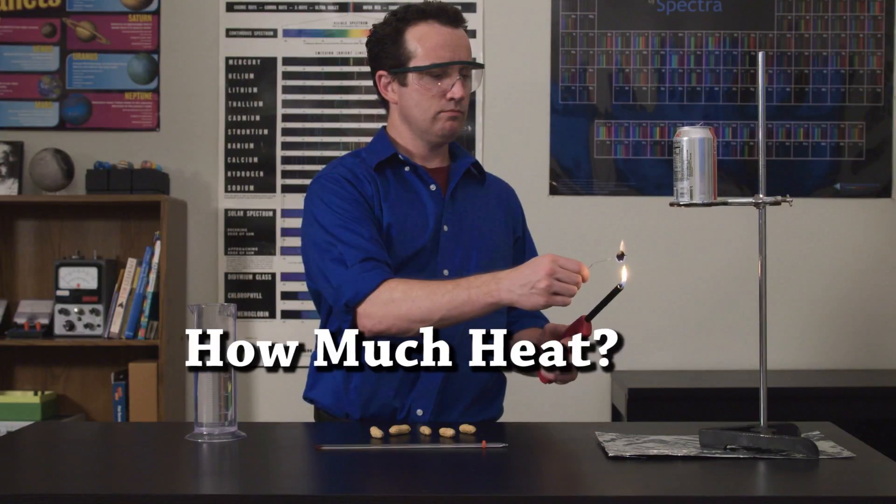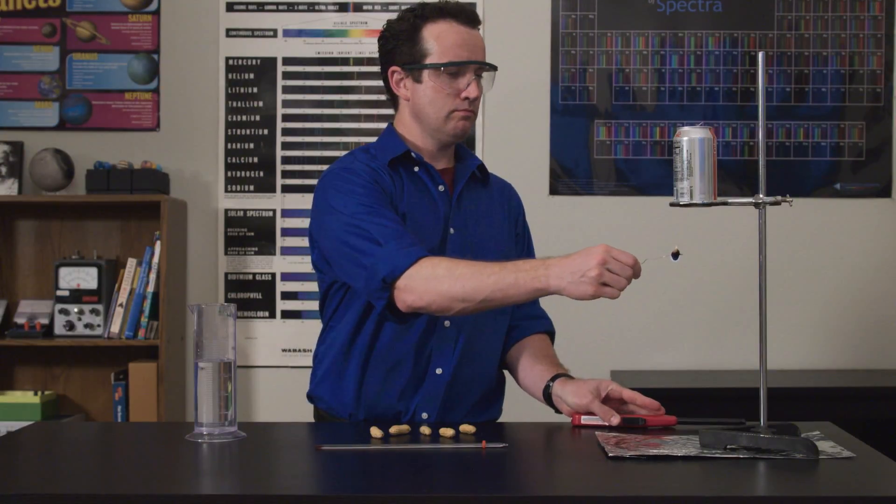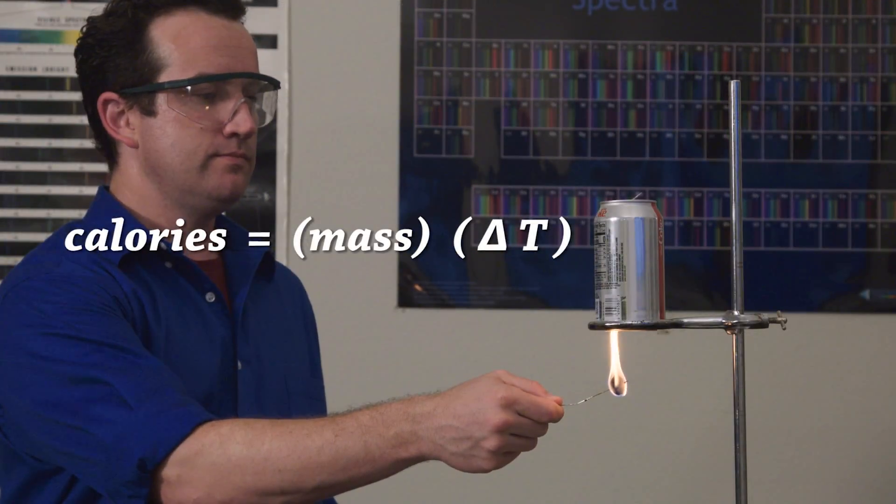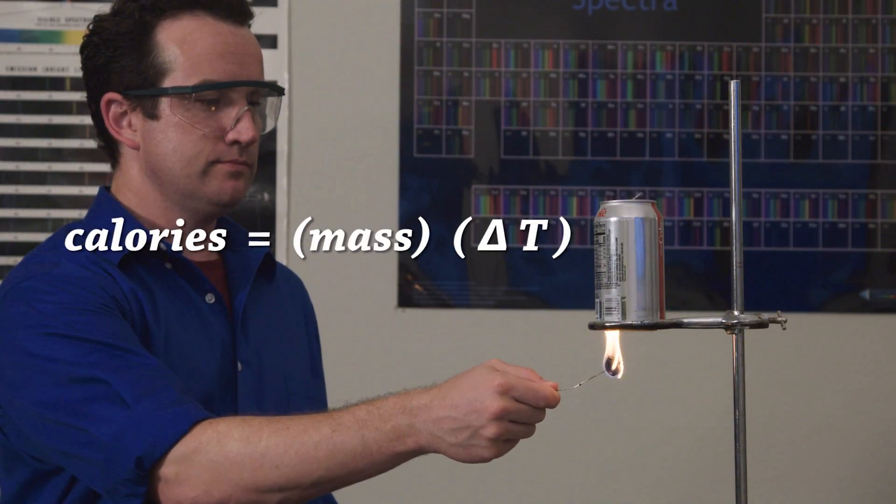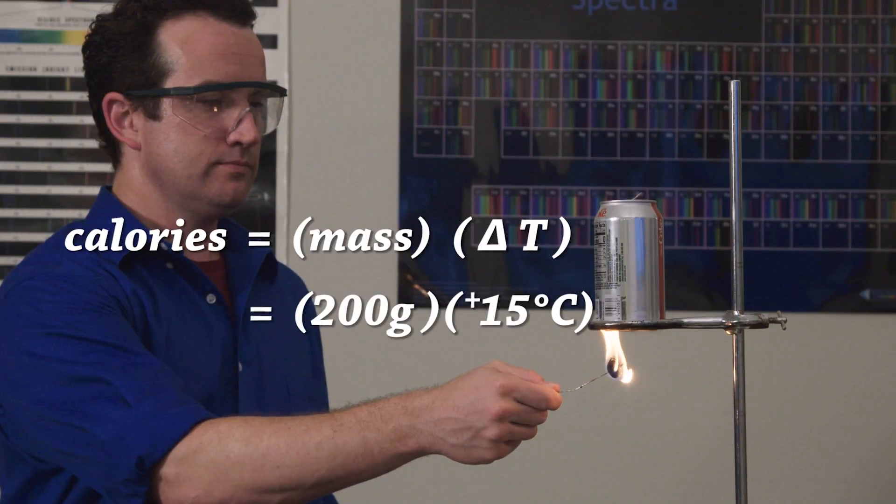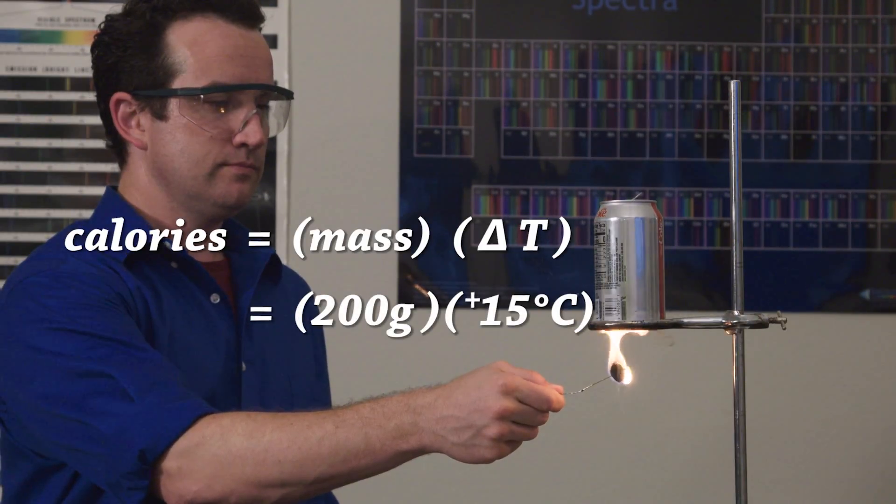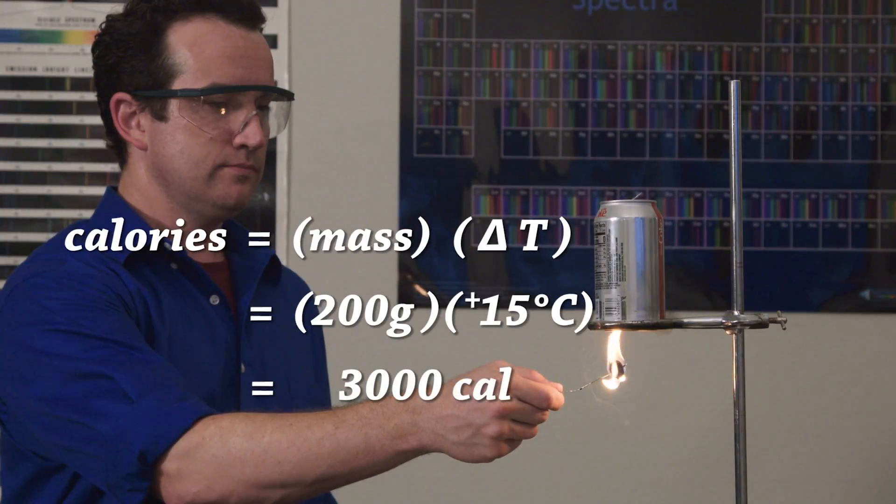You've probably done this lab to measure the number of calories in a peanut. You burn the peanut, and it gives a hot flame as the peanut oil melts and burns. The flame heats up 200 grams of water, and the temperature goes up by about 15 degrees, showing 3,000 calories in each peanut.